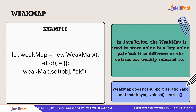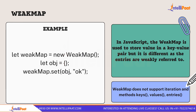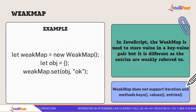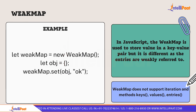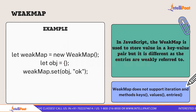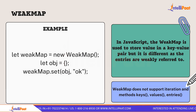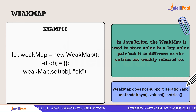To implement a WeakMap, first declare a variable and use a constructor to create a new WeakMap — make sure the casing of the keyword is correct. Then create an empty object. In the next line, use the dot-set method to map that object with some primitive data type, such as a string.